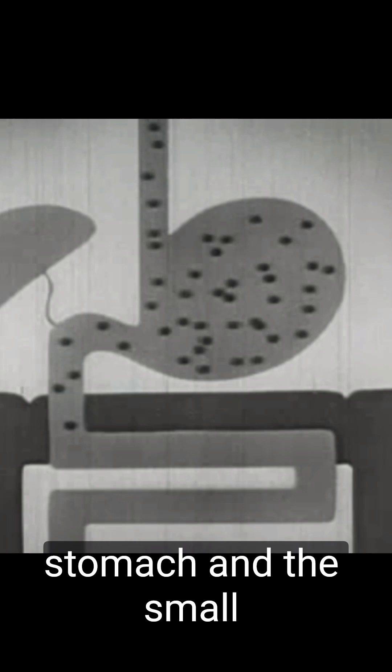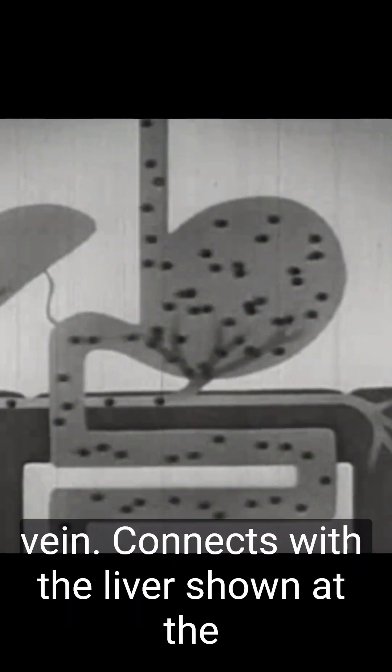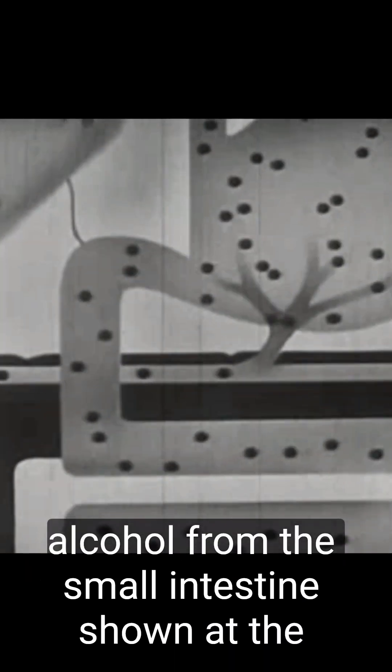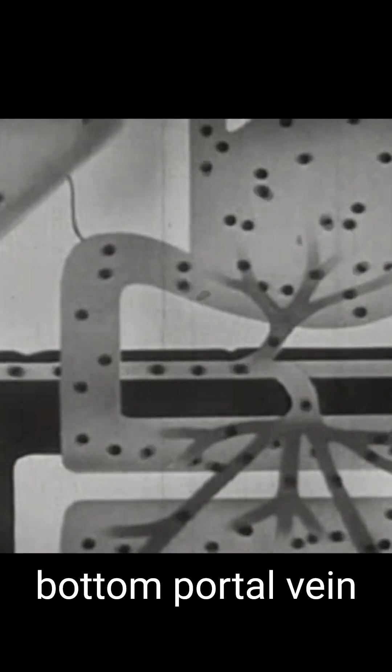Alcohol travels down the esophagus and into the stomach and small intestine. Capillaries in the stomach lead into branches of veins that connect with the liver, shown left. These capillaries absorb alcohol directly from the stomach, and the portal vein carries it to the liver. Other capillaries absorb alcohol from the small intestine, shown at the bottom.